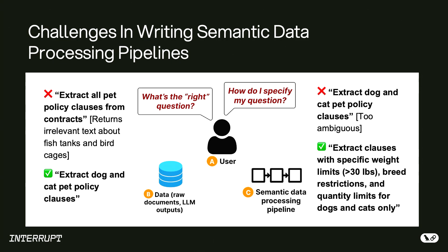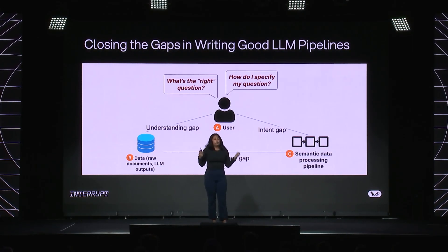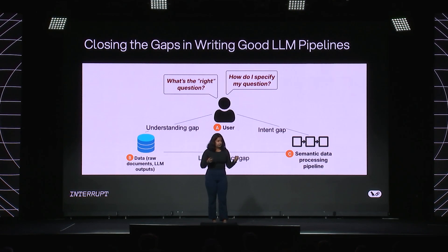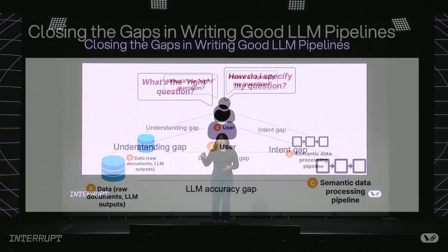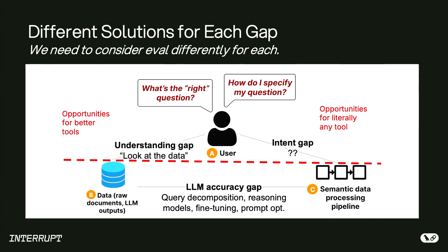Zooming out, what do these challenges mean? Iteration reveals a lot of these insights if done correctly. When we help people build data processing pipelines, we want to close the gaps between the user or developer, the data they're trying to query, and the pipeline they're writing. As researchers, we found there's a lot of tooling in LLM accuracy — ensuring a well-specified pipeline generalizes across all documents — but virtually no tooling addressing the data understanding and intent specification gaps. The rest of this talk is about how we're thinking of closing those gaps.